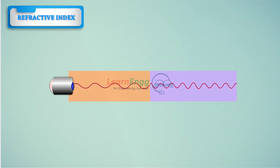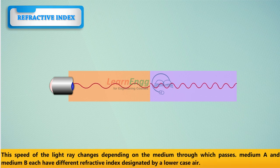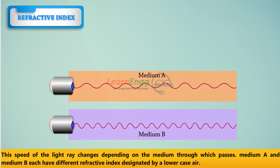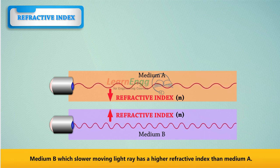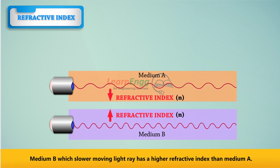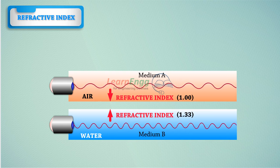We will see a light ray as it propagates straight through two different mediums. The speed of the light ray changes depending on the medium through which it passes. Medium A and medium B each have different refractive indices designated by a lowercase n. Medium B, with slower moving light ray, has a higher refractive index than medium A. For example, water has a higher refractive index than air.